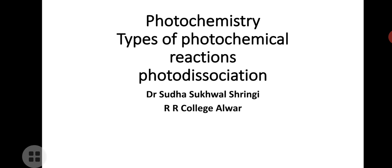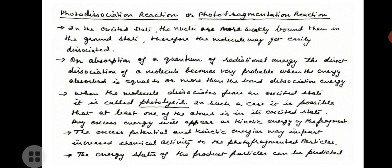Today we will be studying photo dissociation reactions. Photo dissociation is the process which occurs when a molecule, on absorbing a quantum of light energy, undergoes dissociation to smaller molecules, radicals, or atoms. It is defined as the interaction of one or more photons with one target molecule.